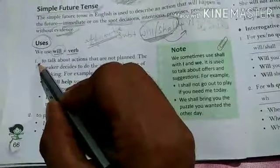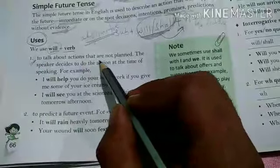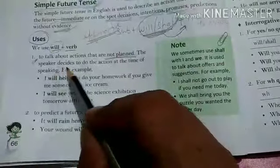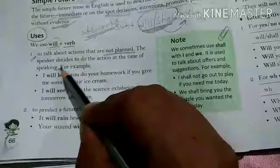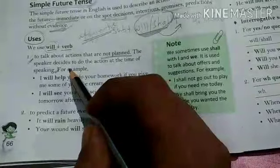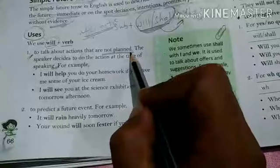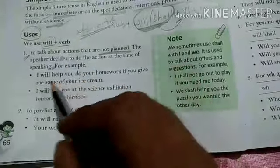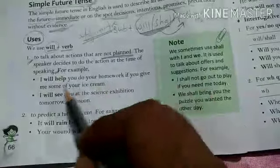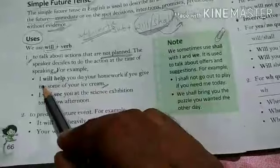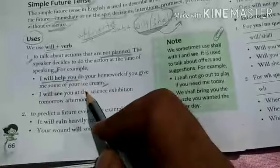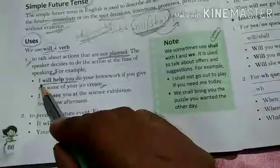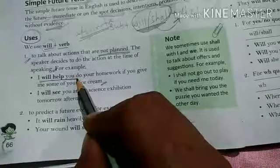Simple future tense is used to talk about actions that are not yet planned but will take place in coming days — the speaker decides the action at the time of speaking. For example: 'I will help you do your homework if you give me some of your ice cream.' This action has not yet taken place — it will take place in the future. Another example: 'I will see you at the science exhibition tomorrow afternoon.' The action will be taking place tomorrow — it has not yet happened.